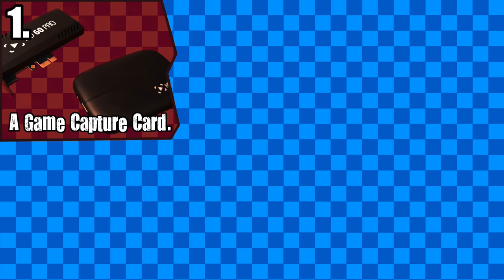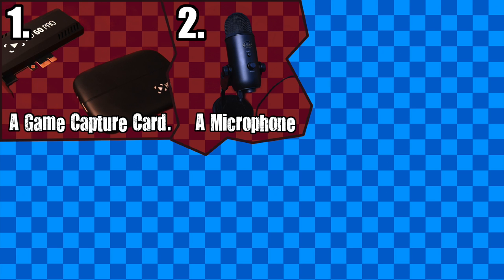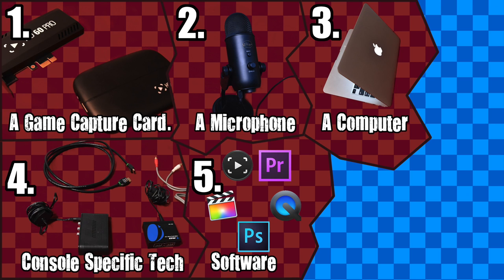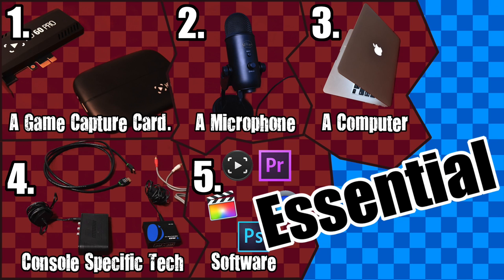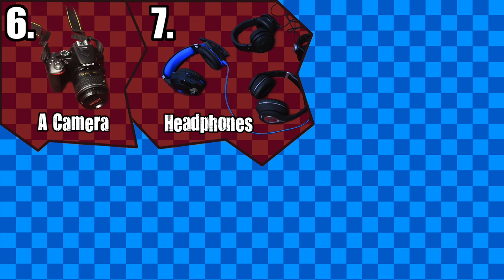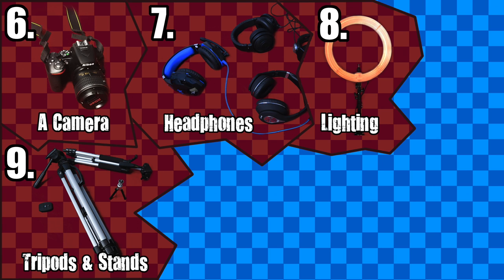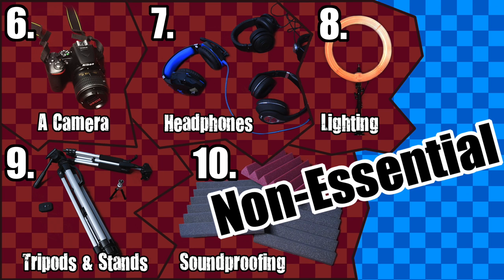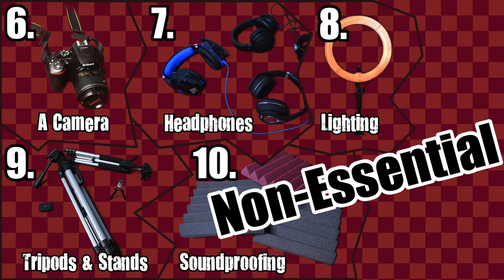This first video is about all the different things — mostly tech — that you will need to record gameplay and Let's Plays. Here is what you'll need: a game capture card, a microphone, a computer, console-specific tech, and software. These are essential things you pretty much have to have if you want to record. However, you might also find yourself needing a camera, headphones, lighting, tripod and stands, and soundproofing. These things are completely optional — it really depends on what you intend to record and how you're recording it.